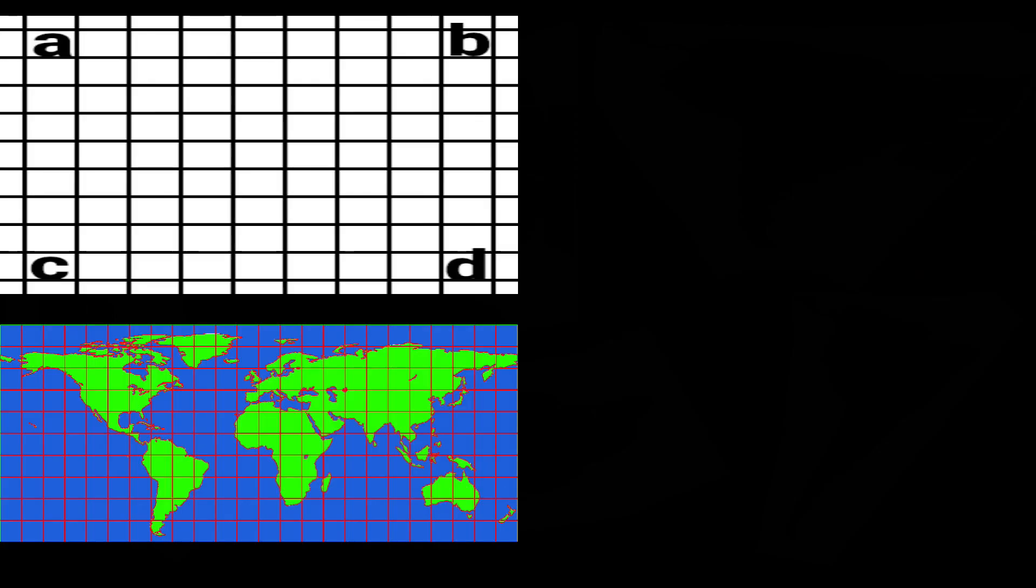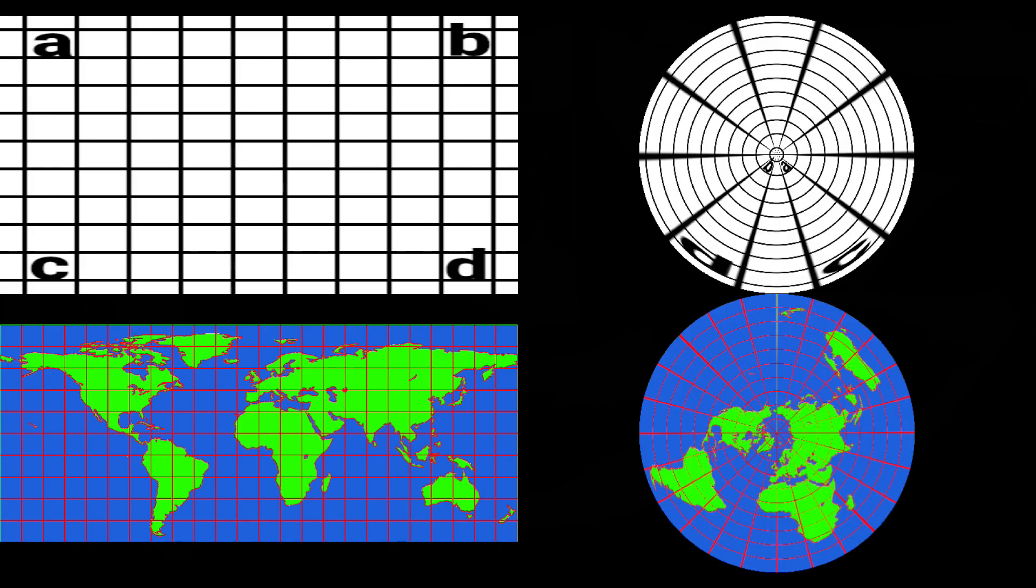On the left is a cylindrical coordinate system where the top line is the North Pole. Cylindrical map projections are the ones most people are most familiar with. On the right is a polar coordinate system where the center point is the North Pole and the outermost circle is the South Pole.